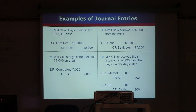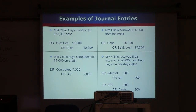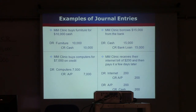In the last transaction on this slide, MM Clinic receives their internet bill of $200 and pays it a few days later. This involves two journal entries. First: debit internet expense $200, credit accounts payable $200 — expense goes up, liabilities go up. Then: debit accounts payable $200, credit cash $200 — liabilities go down and assets go down. So at the end, you still balance.